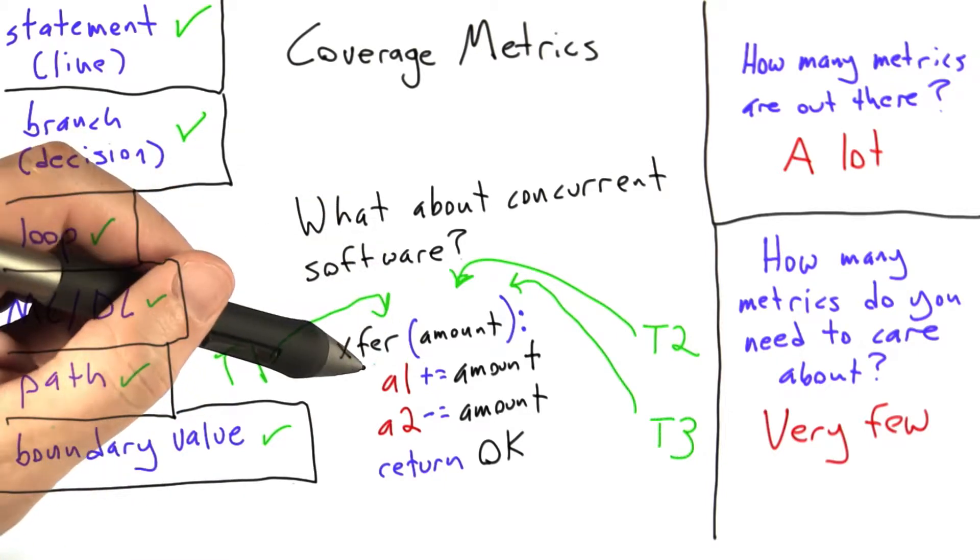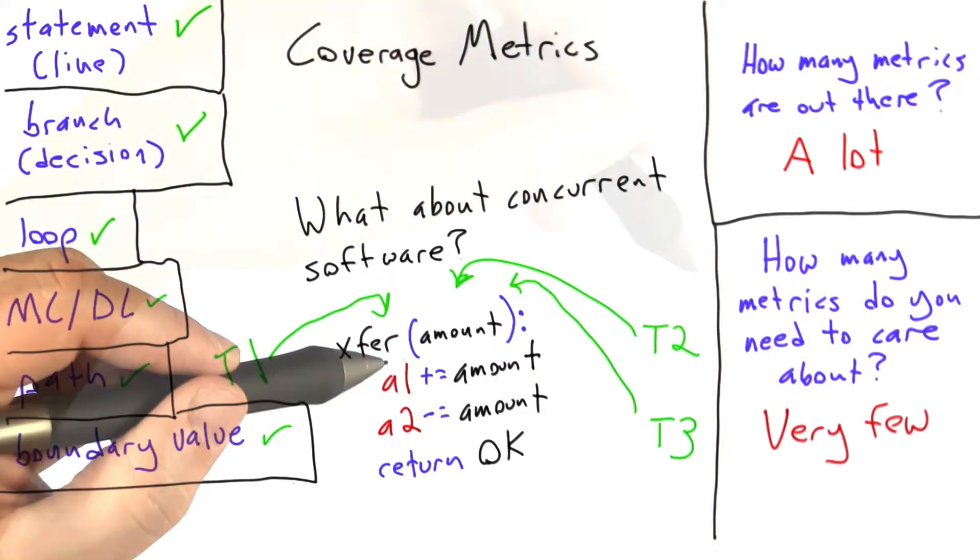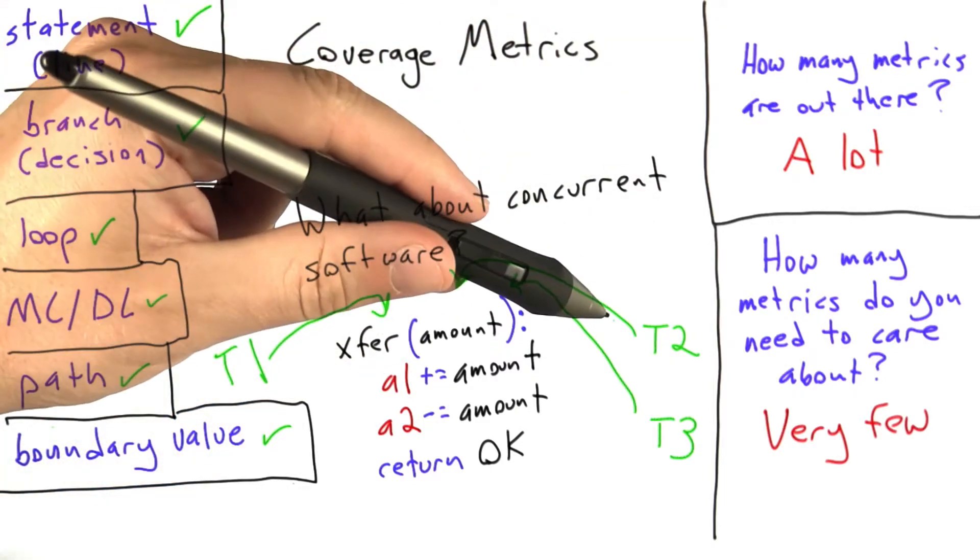And so now we ask the question, what sort of coverage would we be looking for while testing this function in order to detect this kind of bug? And the answer is some sort of coverage metric to make sure that threads T1 and T2 both call this function at the same time while transferring money between the same accounts.